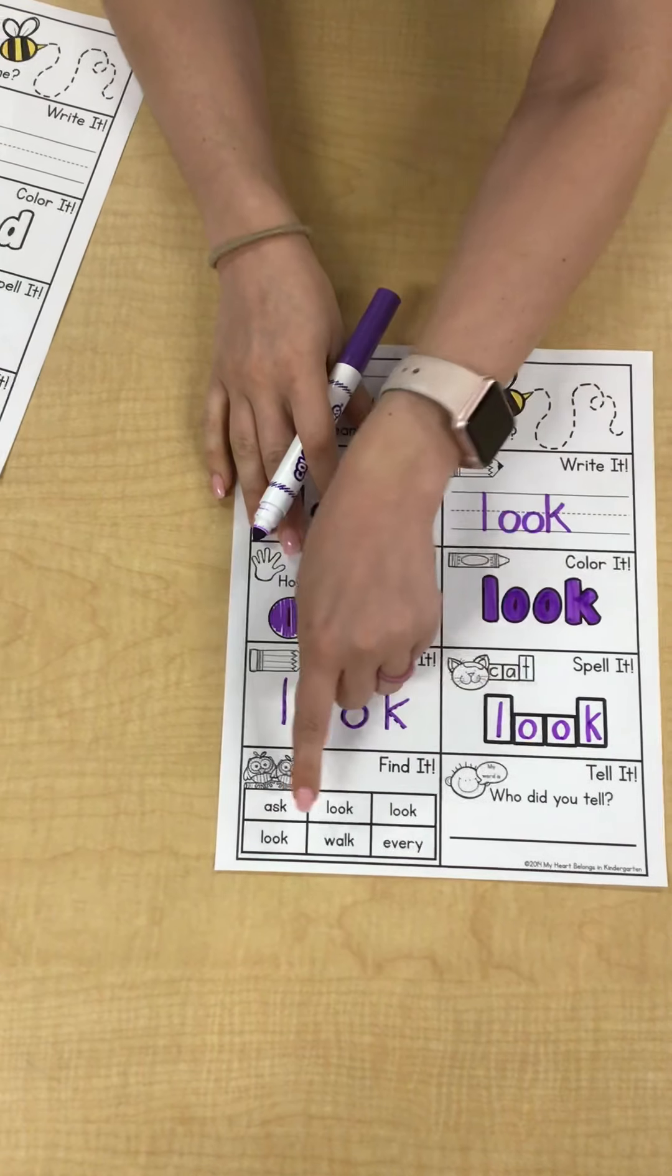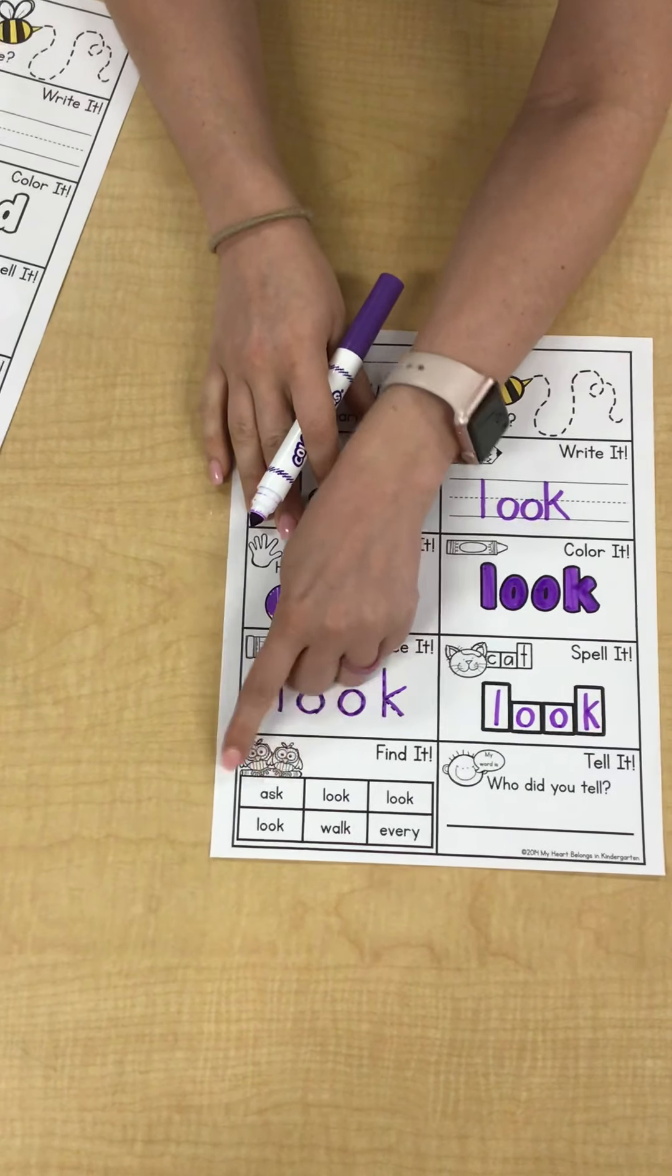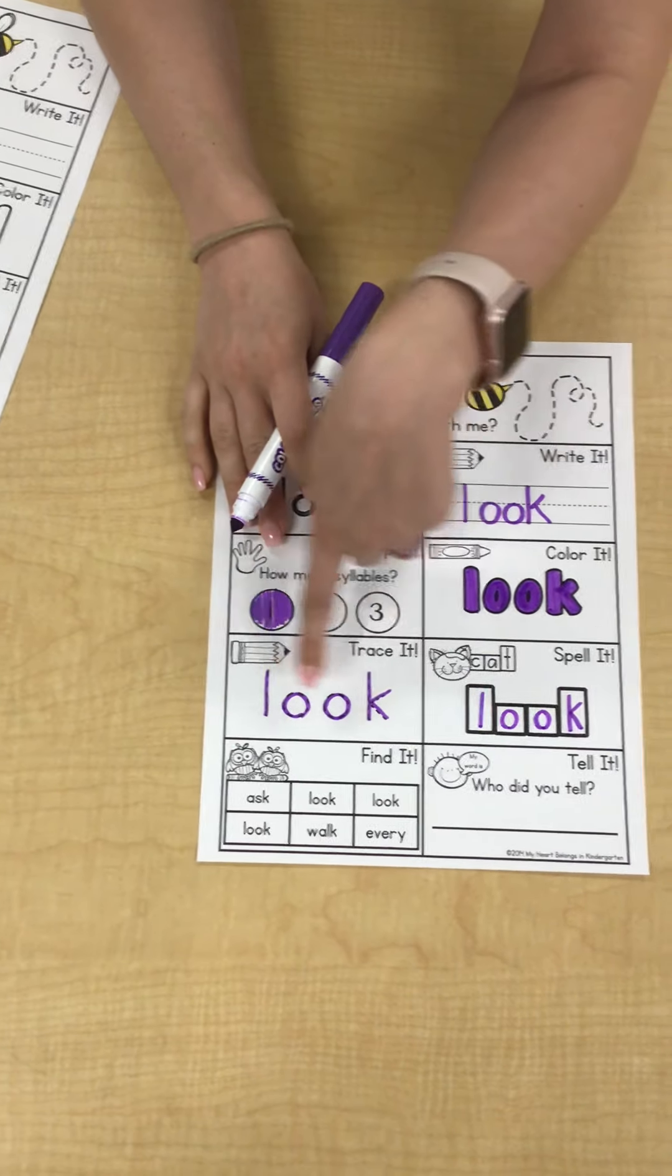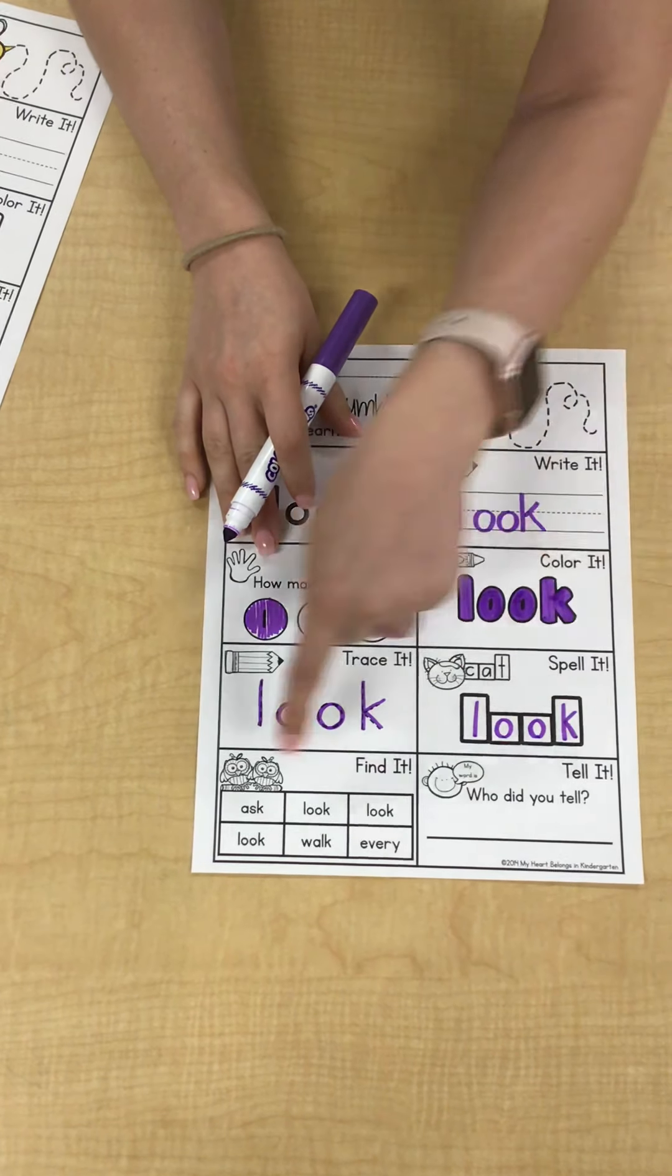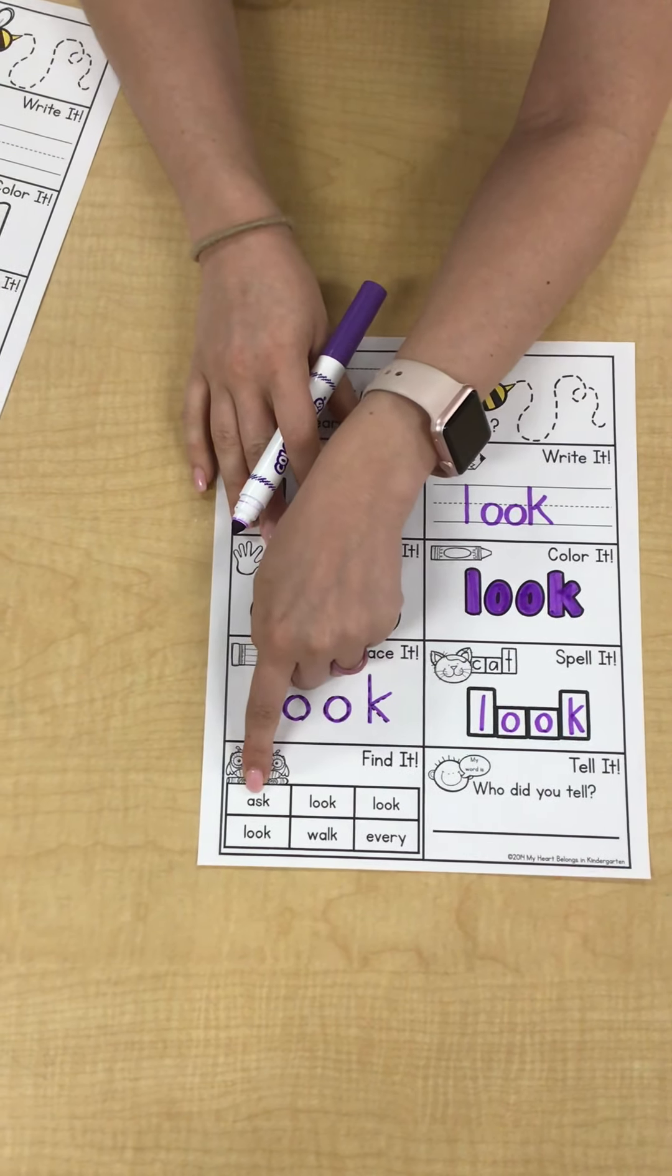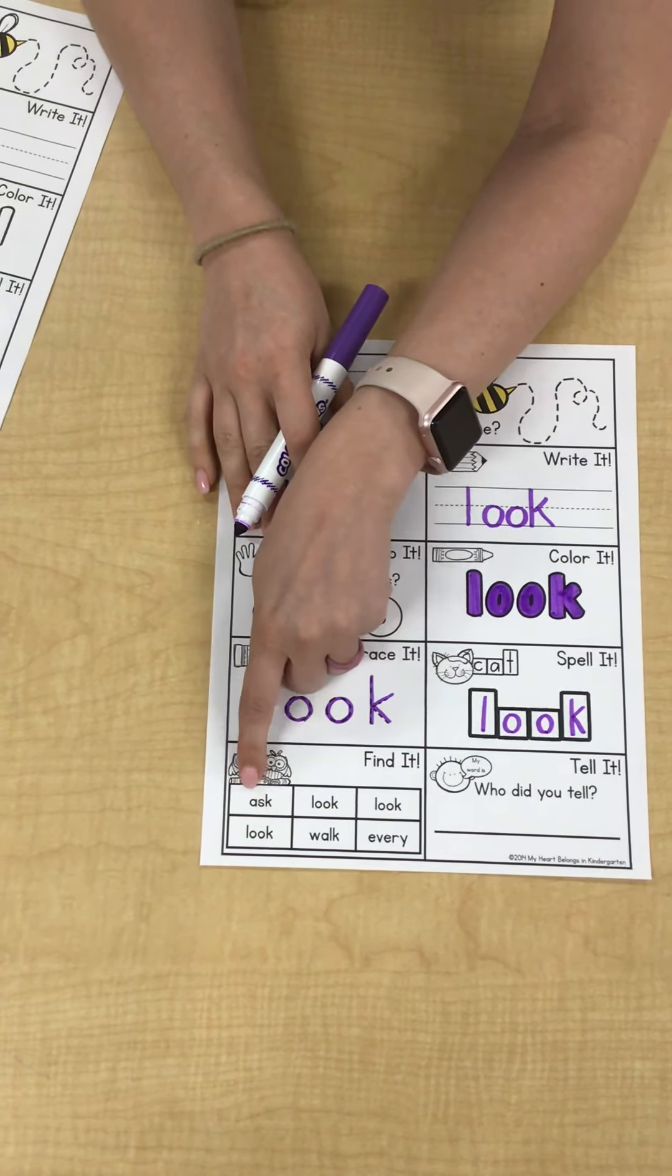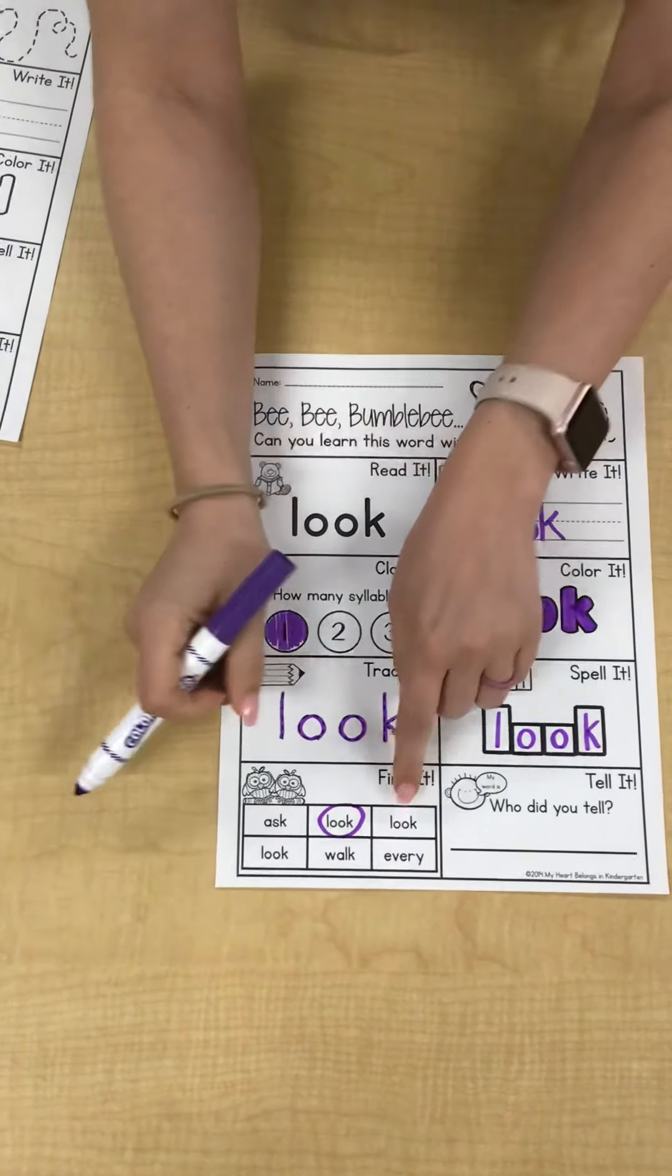The next thing it says is color it. We're going to color our word look just like this. You can color any color you would like. I chose purple because I like the color purple. Colored my word look.